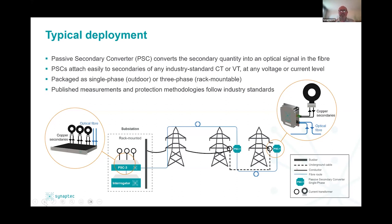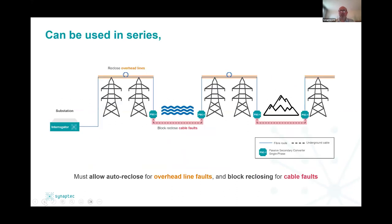Extending the concept of mixed circuit protection: there could be several cable sections in series. One of our big deployments in Europe right now has a line going over mountain to lake to mountain to lake about seven times — multiple cable sections in series along that route. We can instrument all of them individually and give very precise and granular information about how to respond to a fault, no matter how many cable sections there are. One interrogator can monitor three or four cable sections simultaneously along the feeder.